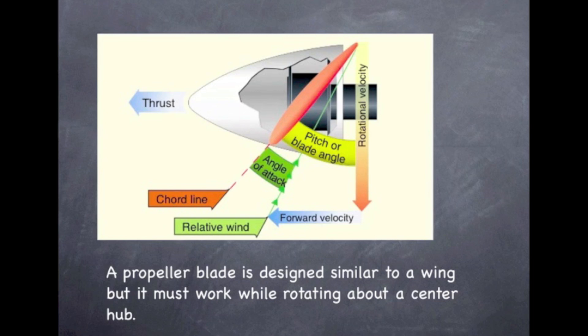Let's look at the design of a propeller blade. The propeller blade is similar to a wing of an airplane except that it rotates around a center hub. Similar to a wing, the propeller's chord is an imaginary line drawn from the center of the leading edge to the rear of the propeller.